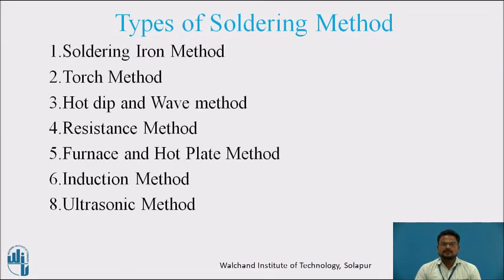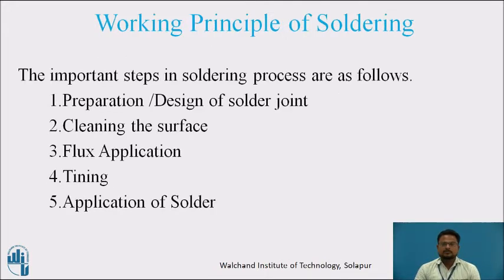Coming to the types of soldering methods: there are different types of soldering methods — soldering iron method, torch method, hot dip and wave method, resistance method, furnace and hot plate method, induction method, and ultrasonic method. These are the important soldering methods used for joining the two base metals.